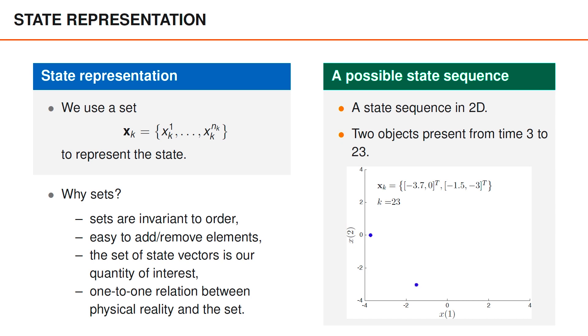Over time, the two objects change their positions, and the state xk changes accordingly. Then, at time 24, one object disappears, and we are left with one object and a state xk that contains the state vector of that object.